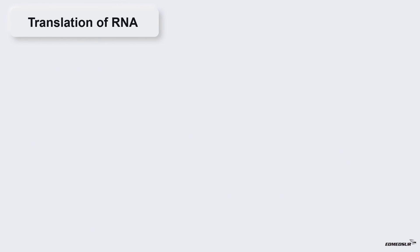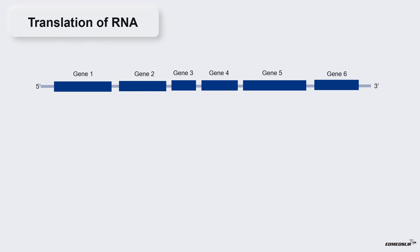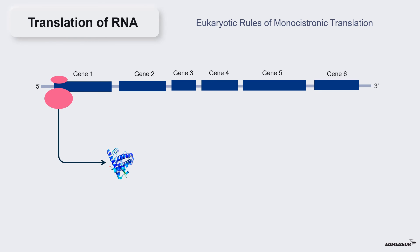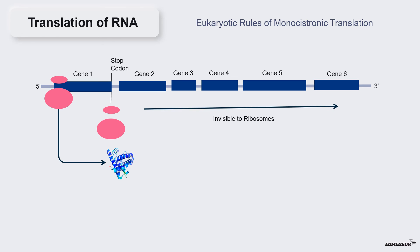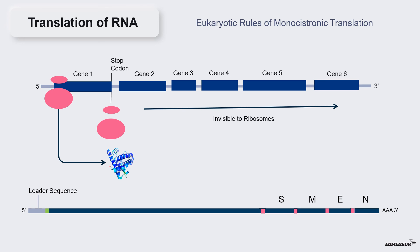A portion of the SARS-CoV-2 genome showing 13 genes is used to explain translation. Based on eukaryotic rules of monocistronic translation, the ribosome will find gene 1, locate the start codon, translate it into protein, and dissociate upon reaching the stop codon. The remaining genes to the right of gene 1 are invisible to the ribosomes. Keeping these rules in mind, we will learn how genes S, M, E, and N are translated from positive-sense subgenomic RNAs.